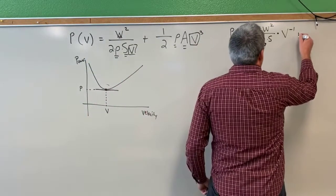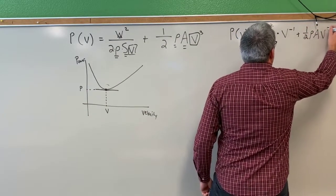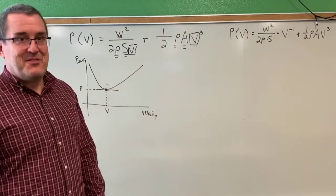Now this other term is fine. We have 1 half rho A V cubed. So so far, no derivatives, just a rewriting. But now let's take the derivative.